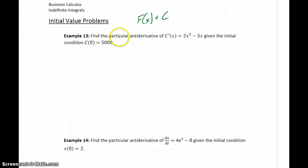So in example 13, we want to find the particular antiderivative, meaning we want to solve for this value c, for this function c'(x) = 2x² - 5x.